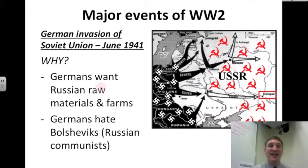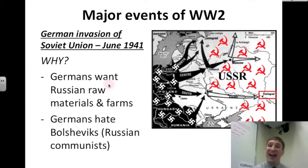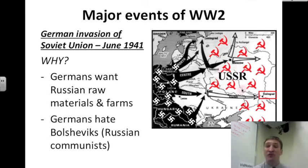They invade the Soviet Union to the east in June 1941. Here are the swastikas showing all of the land that the Nazis have taken — they are heading to the Soviet Union, this huge chunk of land. Why? The Germans want Russian raw materials and farms, and the Germans hate the Bolsheviks, the Russian communists.